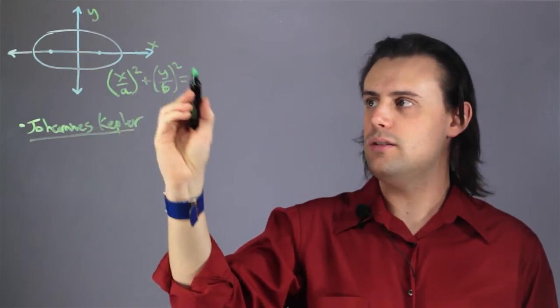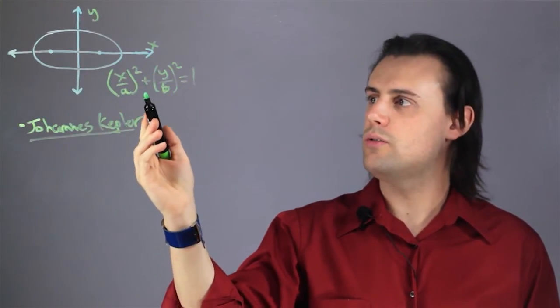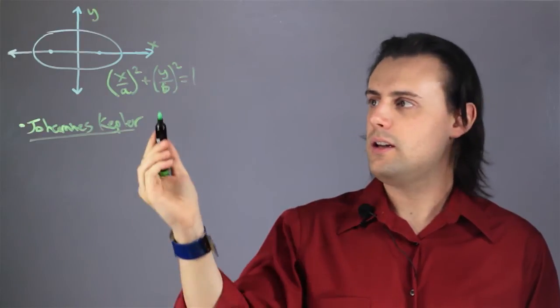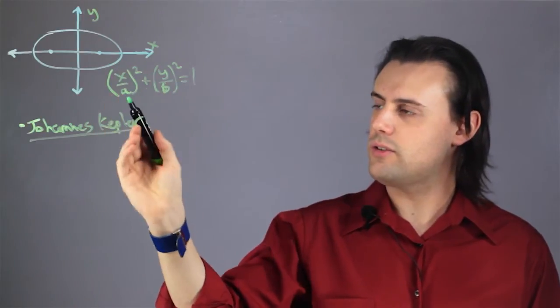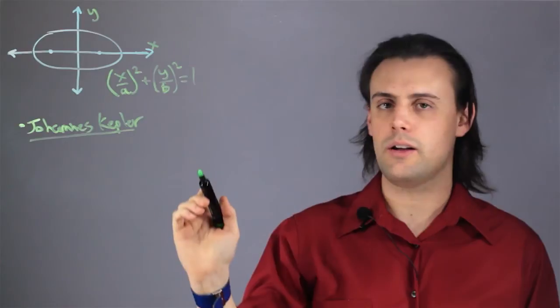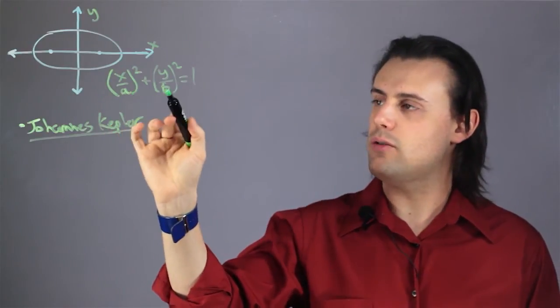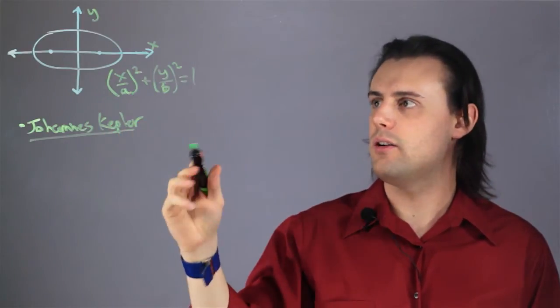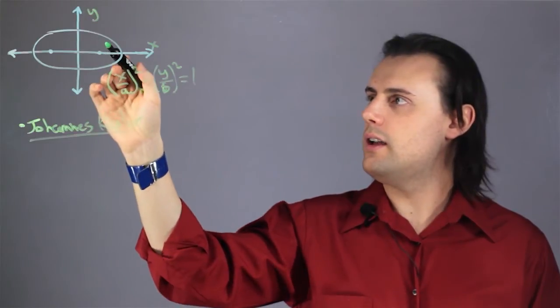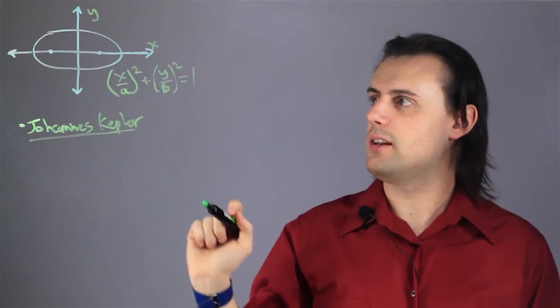Notice that this equation is very similar in structure to the equation for a circle. It's just that in the case of the circle, a and b are equal to 1. As long as a and or b are not equal to 1 and are positive here, then you will end up with an elliptical curve.